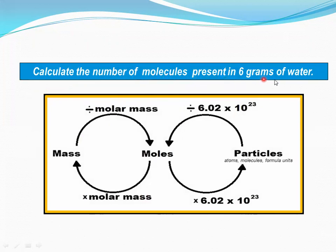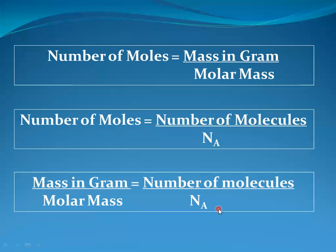First, mass to particle calculation. For this calculation we have to calculate the number of molecules present in six grams of water. We take the given mass, multiply by one over the molar mass to obtain the number of moles. This number of moles is converted into particles by multiplying the Avogadro constant. Number of moles equals mass in grams divided by molar mass, and also equals number of molecules divided by Avogadro constant. Merging both formulas gives us: mass in grams divided by molar mass equals number of molecules divided by Avogadro constant.